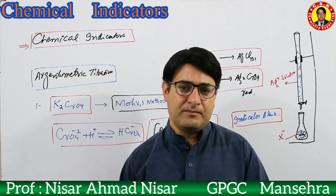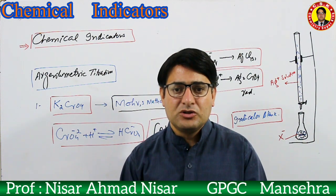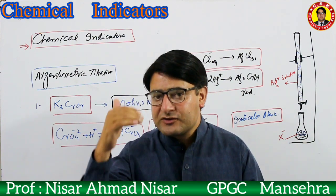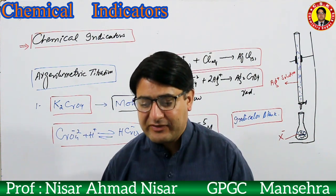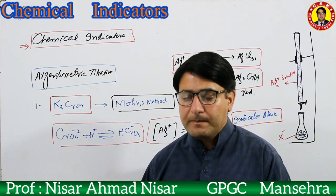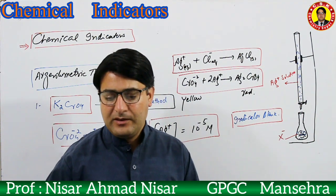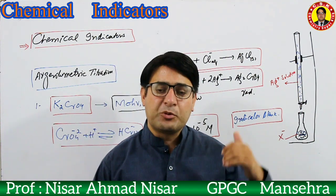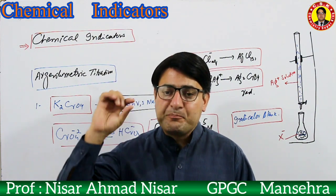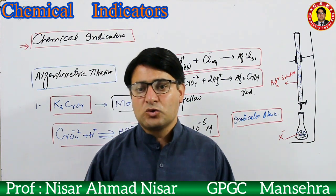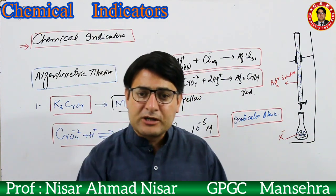The Mohr method is a precipitation titration in which halide ions are determined by standard solution of silver ions using potassium chromate as indicator. In the Mohr method, we take halide ions in a conical flask, take standard solution of silver ions in the burette, and add potassium chromate to the conical flask, which has a yellow color.